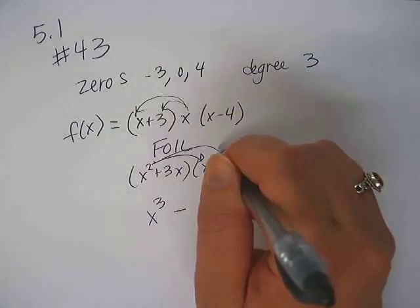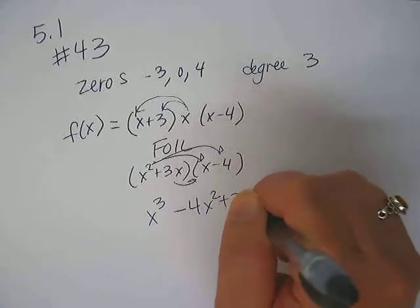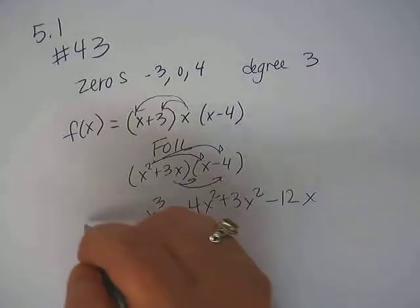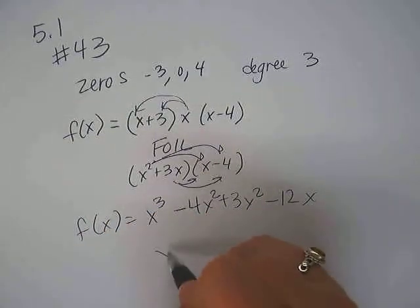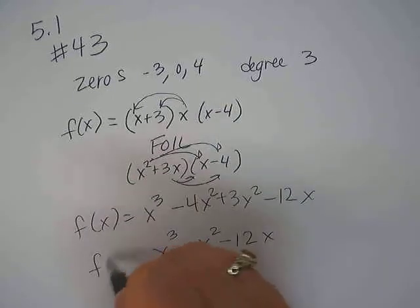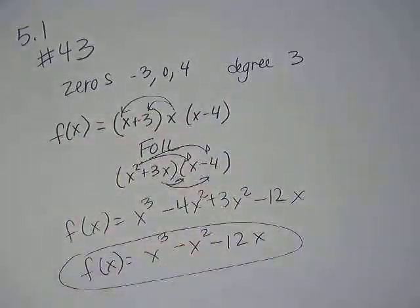So x cubed minus 4x squared plus 3x squared minus 12x. We combine like terms so that we have x cubed minus x squared minus 12x. And there is our function.